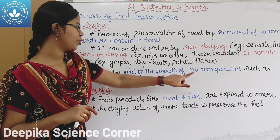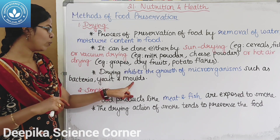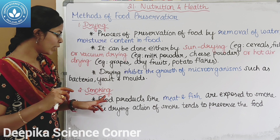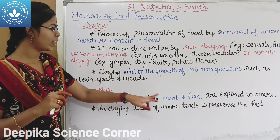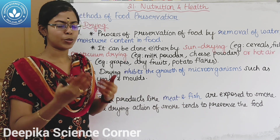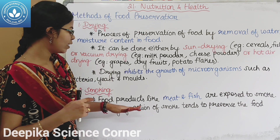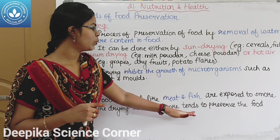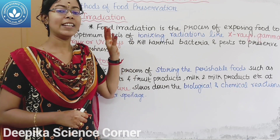Drying prevents the growth of microorganisms such as bacteria, yeast, and mold. The second method is smoking — meat and fish food products are exposed to the drying action of smoke, which tends to preserve the food.